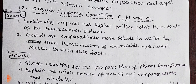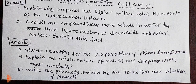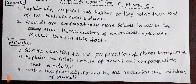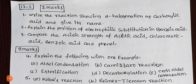Organic compounds containing carbon, hydrogen, and oxygen — 3 marks. Next 4-mark question: give the equation for the preparation of phenol from cumene. Cumene is used for phenol preparation. Next: phenol properties — reduction and oxidation. Next 4-mark question covers equations of phenol reactions.